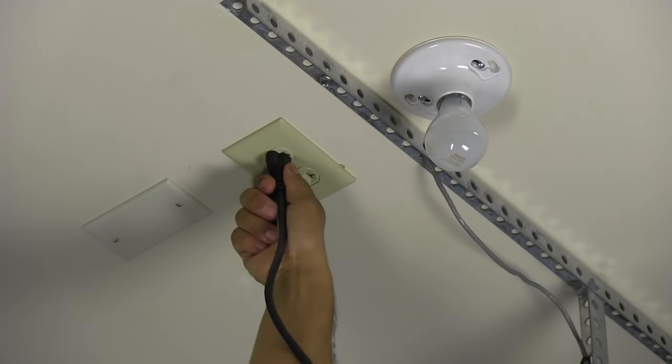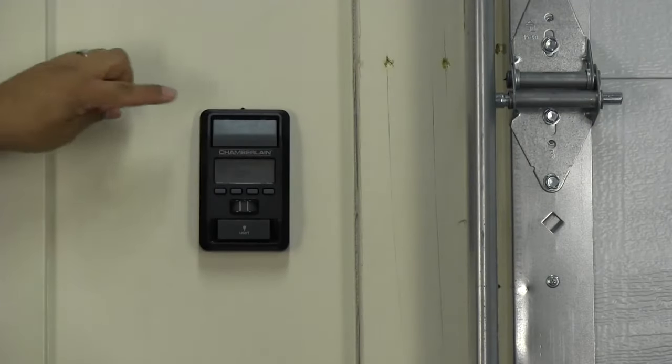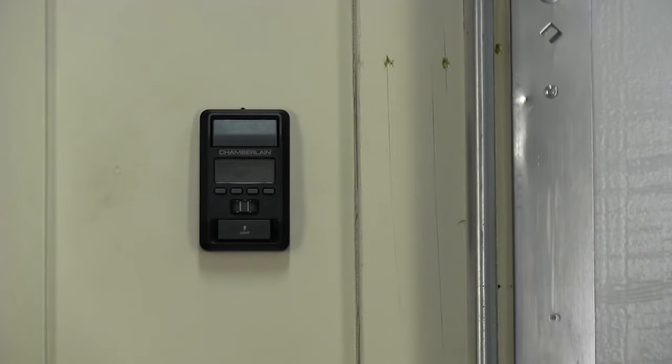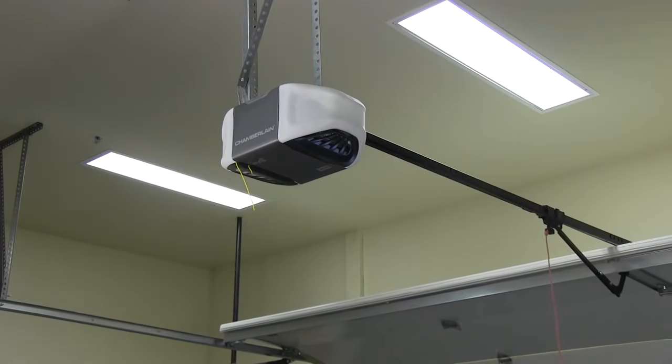Test the battery by unplugging the garage door opener. Activate the garage door opener using the door control or remote control. The garage door opener may run slower if the battery is not fully charged.